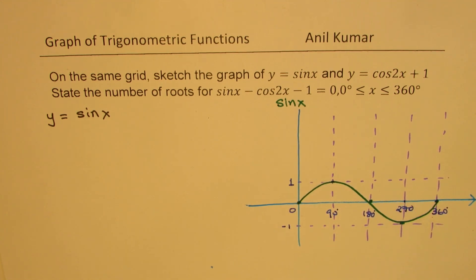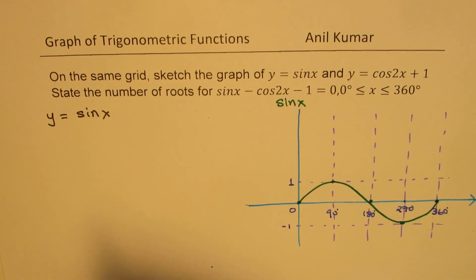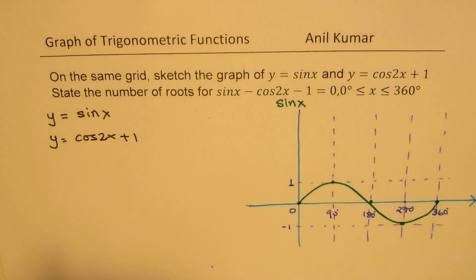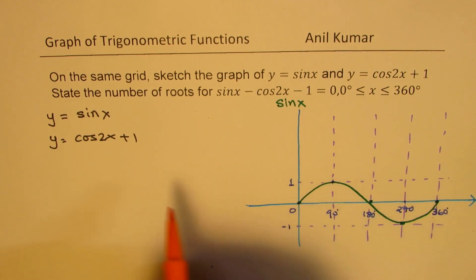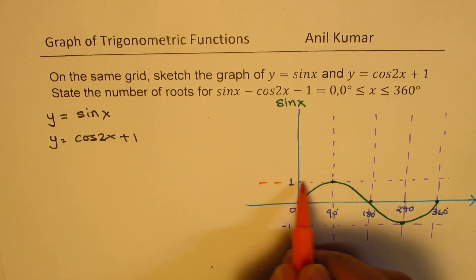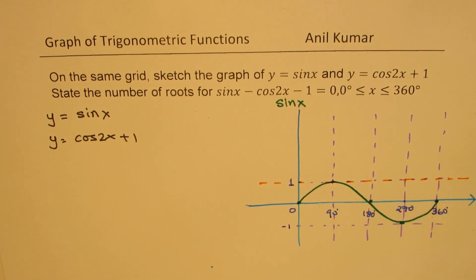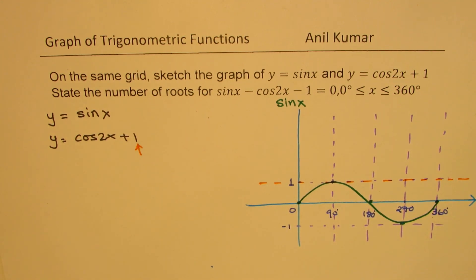Perfect. Now, let us see how to sketch the second graph, which is y equals cos of 2x plus 1. Well, plus 1 means translate by 1 unit up. So the x-axis now for cos 2x will be somewhere here. So that is the x-axis.